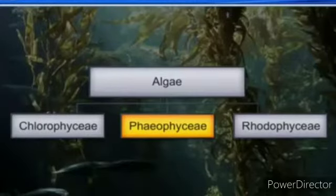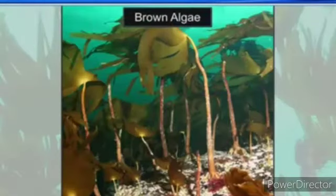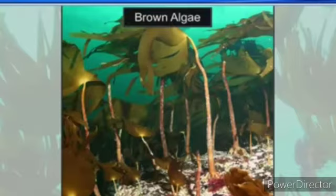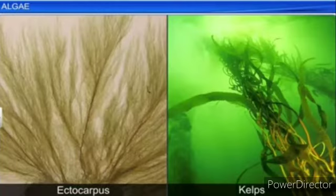The second class is Phaeophyceae — the brown algae. The members of Phaeophyceae are found primarily in marine habitats. They show great variation in size and form, ranging from simple branched filamentous forms like Ectocarpus to profusely branched forms represented by kelps, which may reach a height of 100 meters.